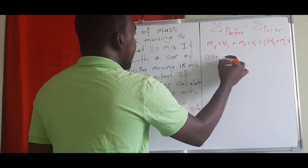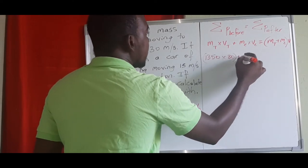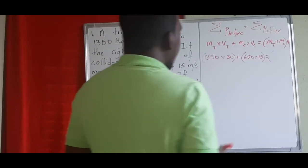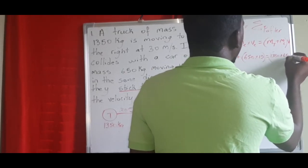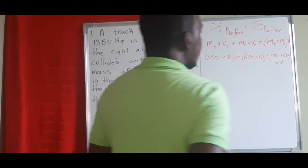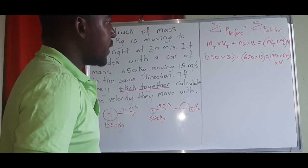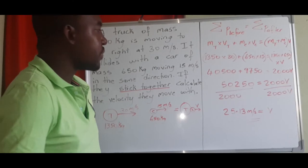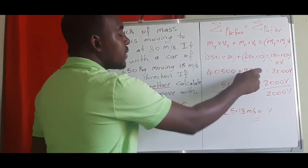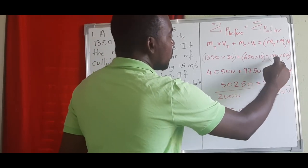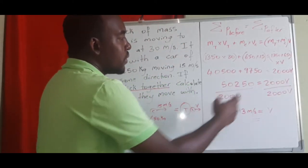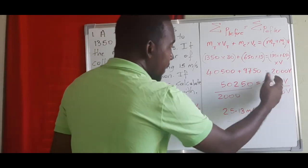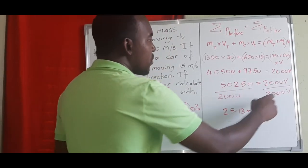Let's substitute: 1,550 times 30, plus 650 times 15, equals (1,550 + 650) times v. That gives us 46,500 plus 9,750 equals 2,200 times v. Adding the left side gives 56,250 equals 2,200v. We divide both sides by 2,200 to get v.